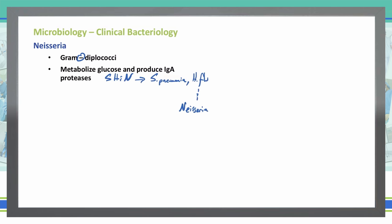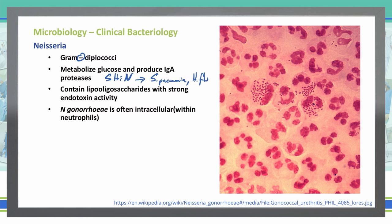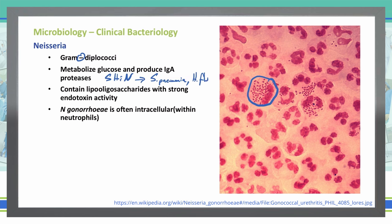Some facts about Neisseria specifically: it contains lipooligosaccharides that have a strong endotoxin activity, and it is often intracellular, meaning it is found often within neutrophils. In this picture, you can see some of these neutrophils that have many, many Neisseria bacteria inside them. We do find some of this bacteria floating elsewhere outside in the plasma, but for the most part we are going to find them within these neutrophils, because they are often intracellular.